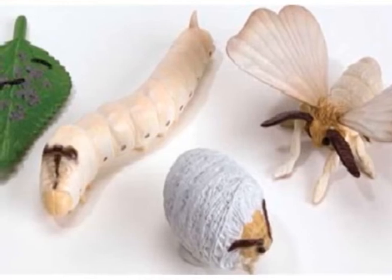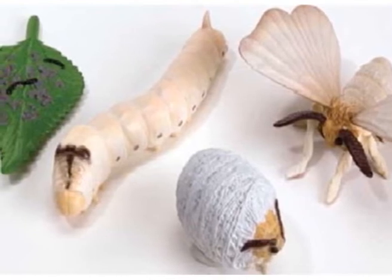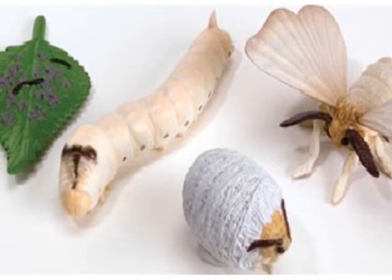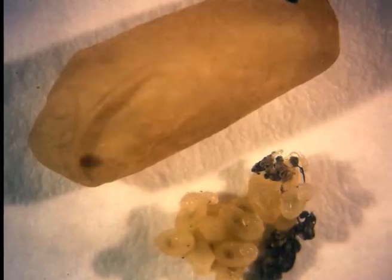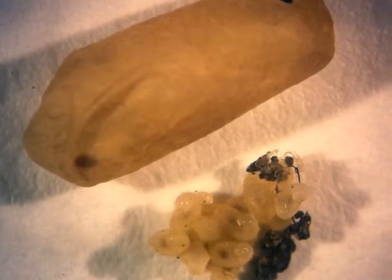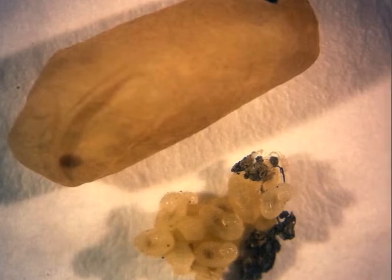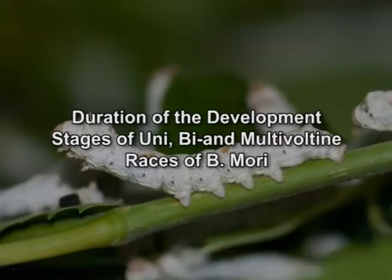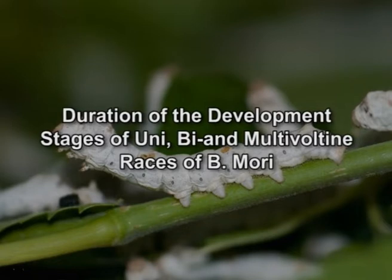The domestic silkworm undergoes complete metamorphosis, that is holometabola, and passes through 4 morphological stages: egg, larva, pupa and adult. The duration of each stage varies according to its inherited racial characters and according to environmental conditions like climate during rearing and the quality of food. The life cycle is completed in 6 to 8 weeks. The duration of development stages of uni, bi and multivoltine races differs in Bombyx mori.